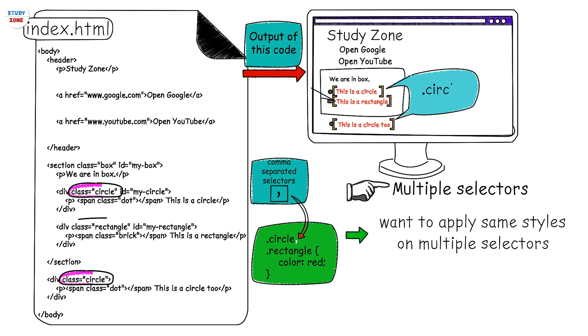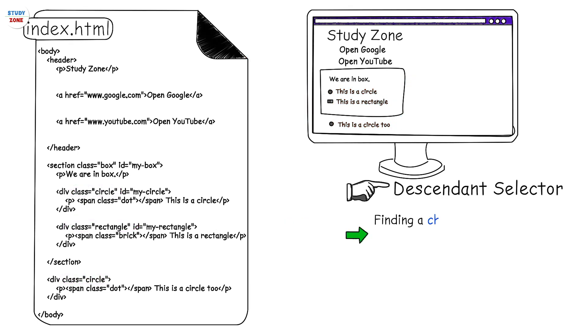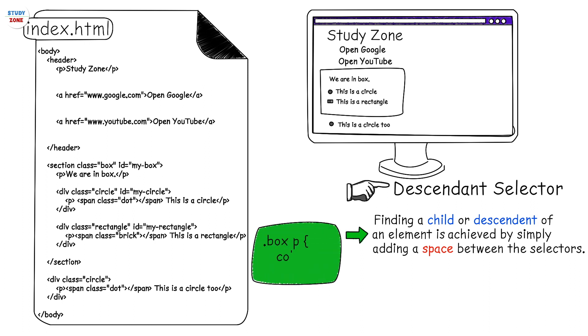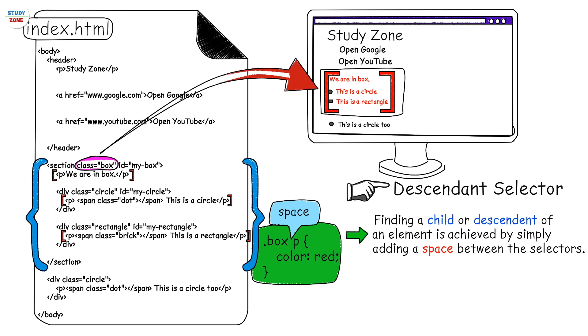Descendant selector: finding a child or descendant of an element is achieved by simply adding a space between the selectors. For example, .box p { color: red; } this selector will change the color of only the p tags inside the element with class name box. The color of other p tags will have no impact.